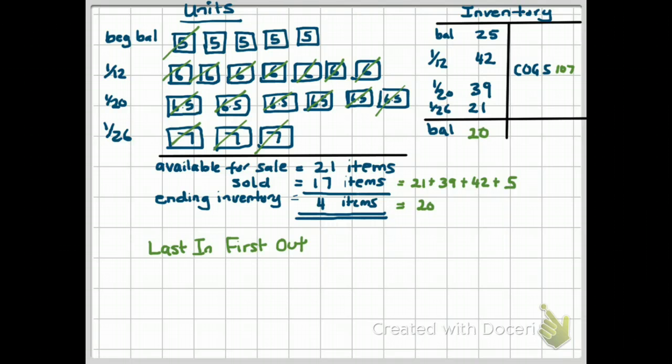Again, remember, this is just an inventory valuation method. Companies do not go to their warehouse and pick the last items they bought to sell. What they are doing is just valuing inventory. If the question is asked, what would companies physically do? What they would typically do is they would sell the items that they bought first. They would go and sell those first. So FIFO is similar to what companies would physically do.